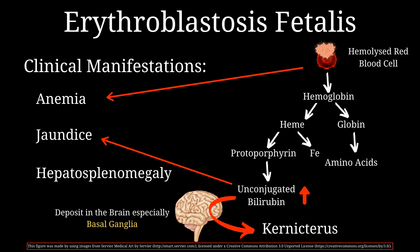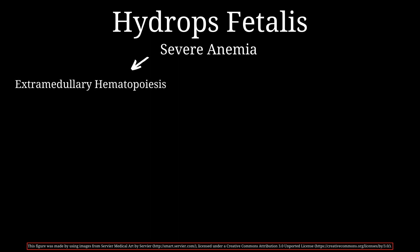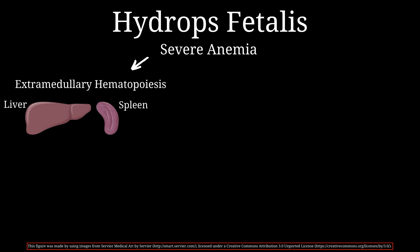One of the most severe clinical presentations of erythroblastosis fetalis worth mentioning is hydrops fetalis. Hydrops fetalis is when large volumes of fluid build up in the fetus's tissues and organs. Let's go through a flowchart to understand this condition better. The fetus in hydrops fetalis will have severe anemia, which will cause extramedullary hematopoiesis to kick in, meaning that the liver and spleen are also producing red blood cells.